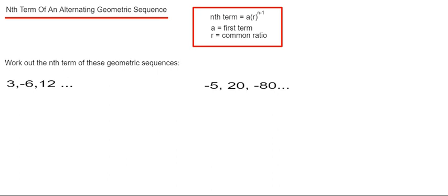The common ratio is the number that you multiply the previous term by to give you the next term in the sequence. You can get this by dividing the second term by the first term. Then we just put these two numbers into the formula: a times r to the power of n minus 1.